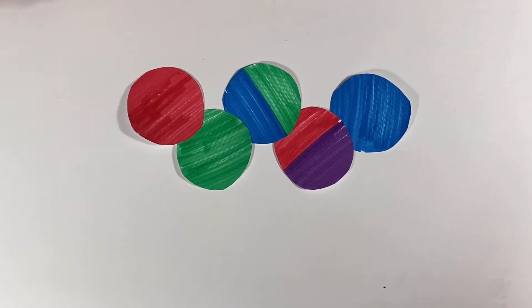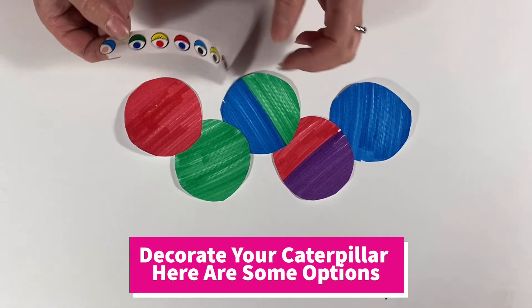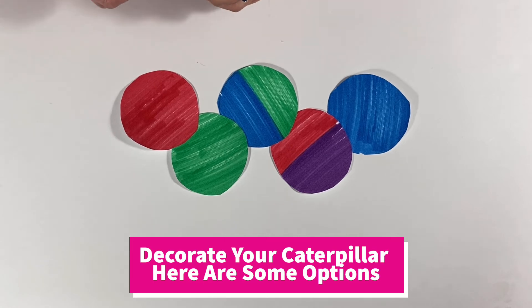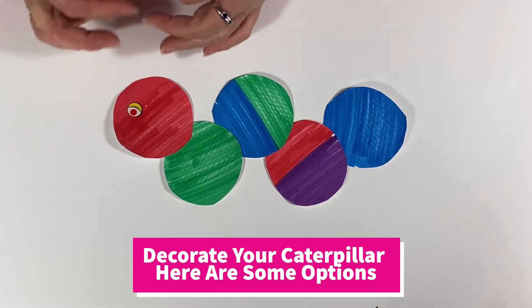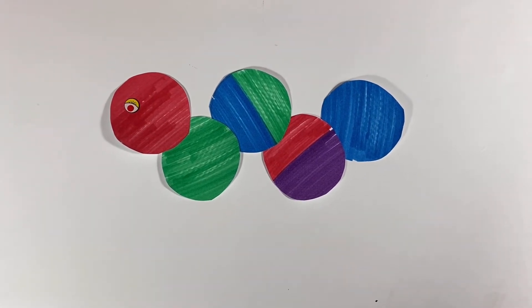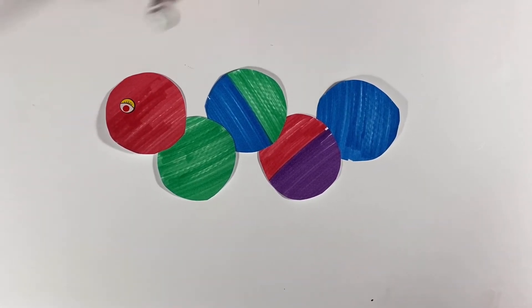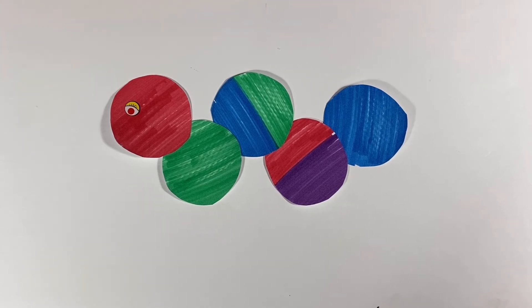With this caterpillar here, I have got some stick-on eyes. Some people might have googly eyes and some might just want to draw their eyes. We'll show you different ways you can draw them. There's my eye, and then I'm going to get a black marker because we're not going to see a big red smiley face.